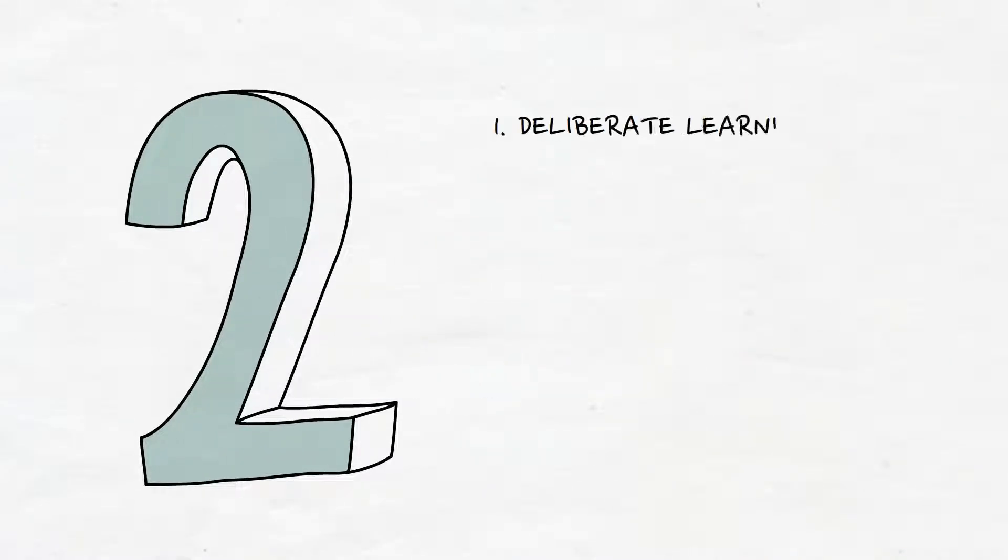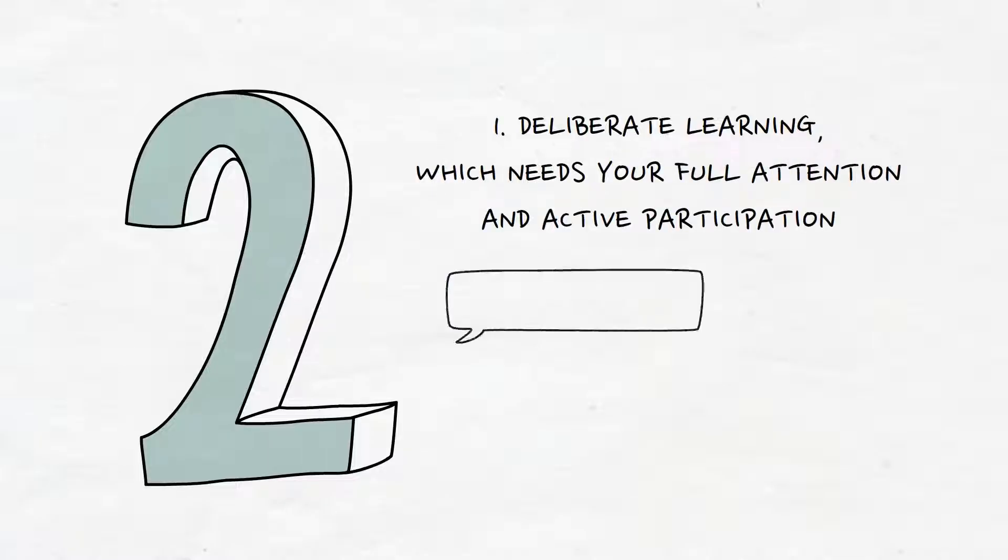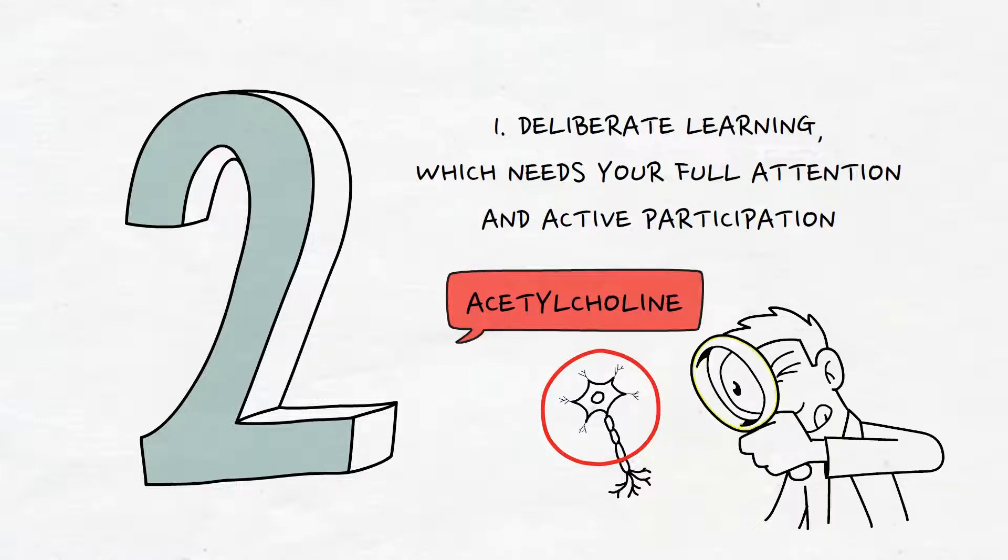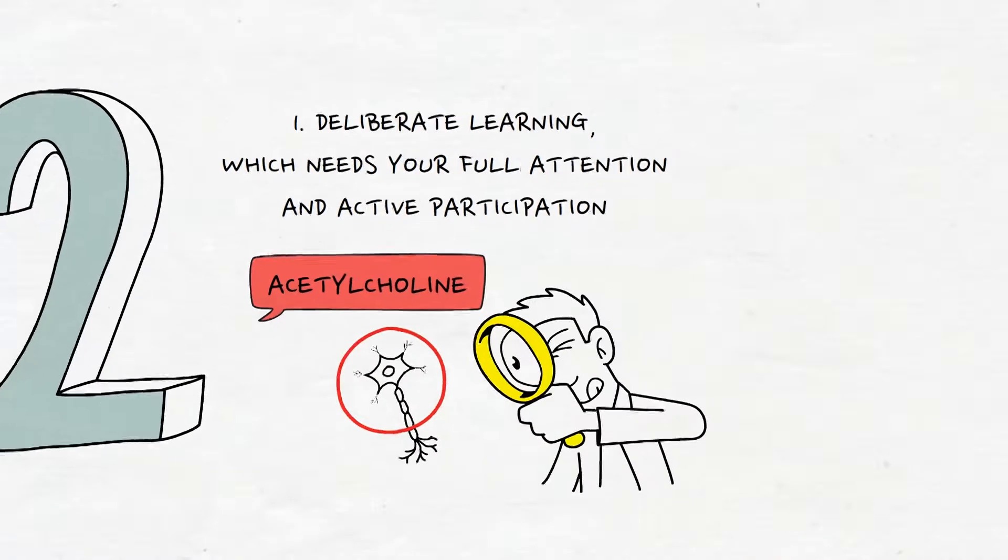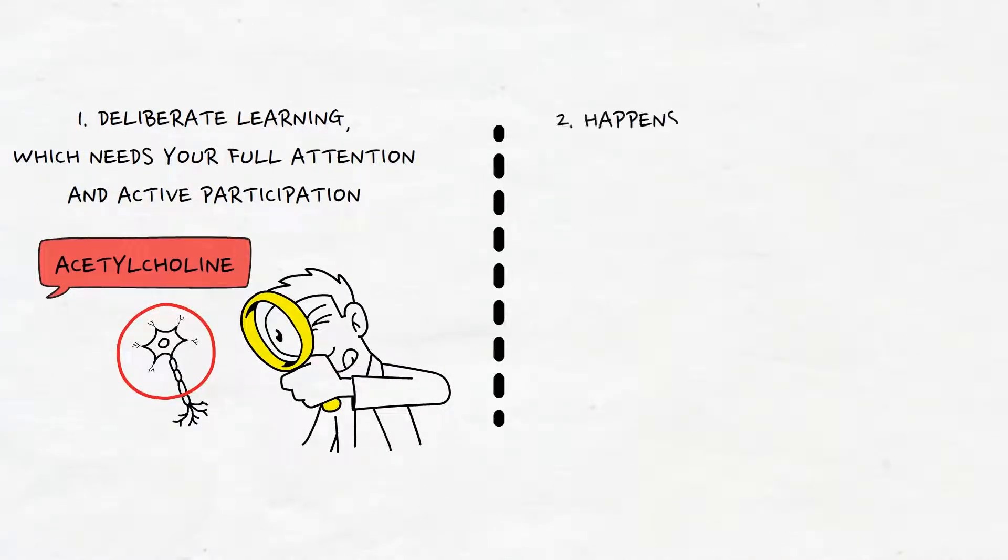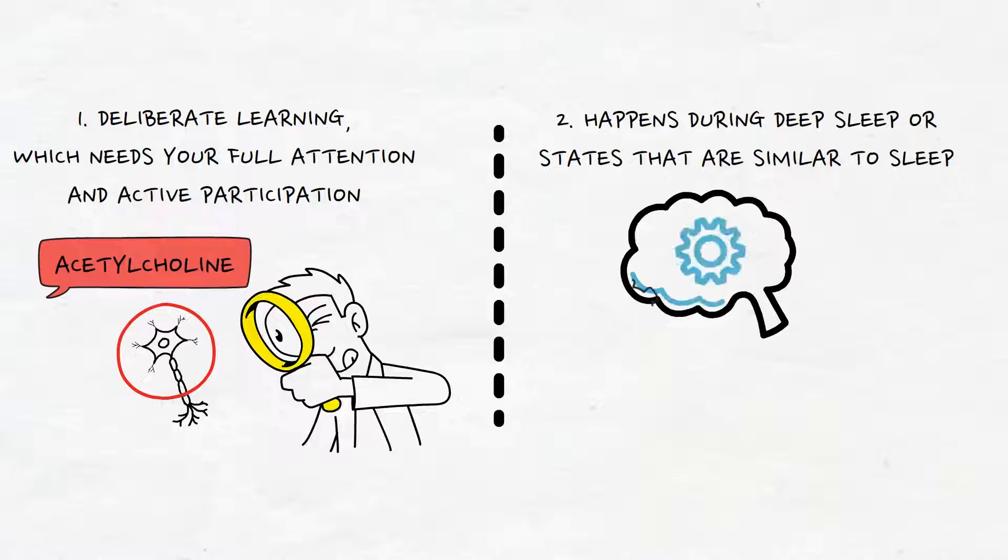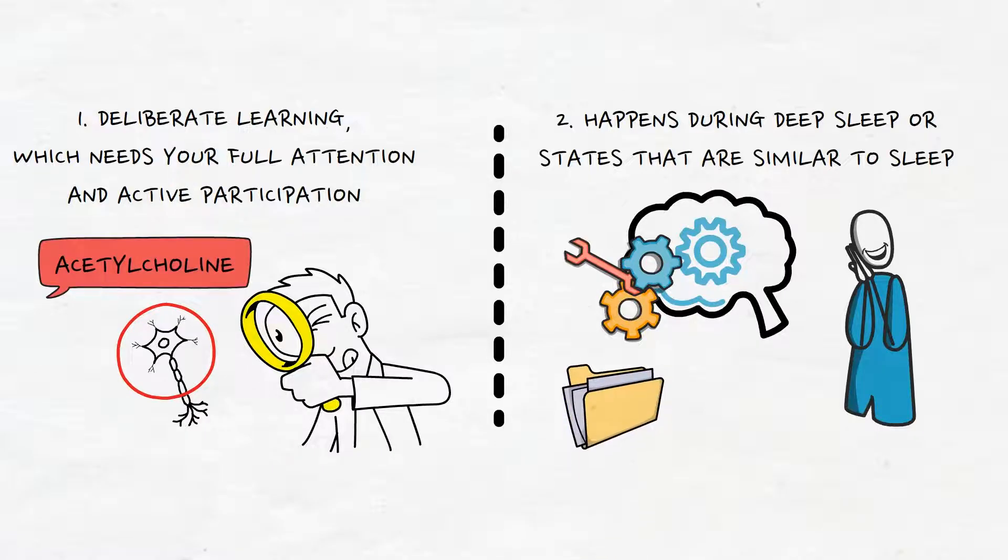It takes two steps to learn something. The first step is deliberate learning, which needs your full attention and active participation. During this stage, a neurotransmitter called acetylcholine marks certain connections or neurons that may later get stronger. This is where your focused effort and deliberate practice come into play. The second step of learning happens during deep sleep or states that are similar to sleep. During these times, the nervous system actually changes how it works. It's amazing to think that while we sleep, our brains are actively reorganizing and integrating the information we learned while awake.